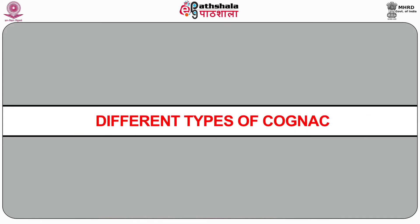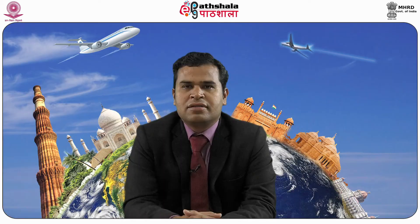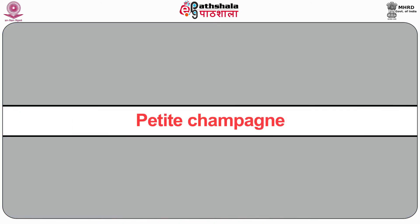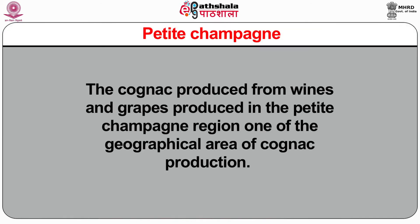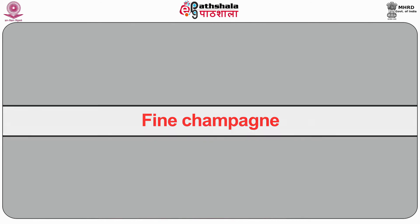Now let's discuss the different types of Cognac. The first is Grand Champagne, also called Grand Fine Champagne — the Cognac made in the most traditional way in the Grand Champagne region. Next is Petite Champagne, a Cognac produced from vines and grapes in the Petite Champagne region. Then there is Fine Champagne, which is produced from a mix of brandies from the Grand Fine Champagne and Petite Champagne regions, but must have at least 50% brandy from the Grand Fine Champagne region.